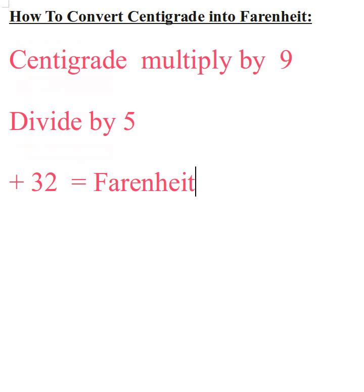The formula to convert centigrade into Fahrenheit is simply: multiply centigrade by 9, divide by 5, add 32, and there you have your answer in Fahrenheit.